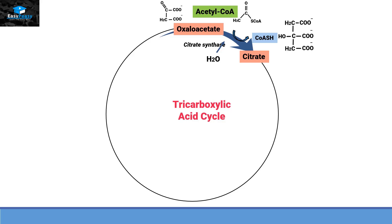In order to see how these two compounds are combined, let's number the carbon atoms on each molecule. Carbon number one and carbon number two are on acetyl-CoA, while carbon numbers three, four, five, and six are on oxaloacetate. By this way we can number the carbon atoms on the citrate molecule and see that carbon number one of acetyl-CoA combined with carbon number three of oxaloacetate.